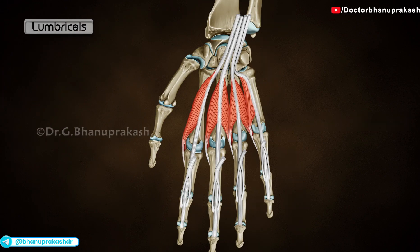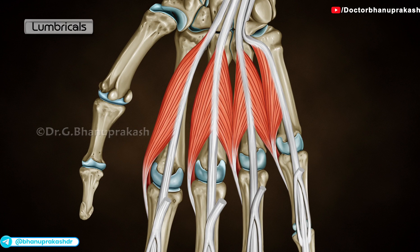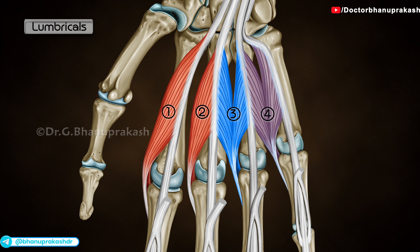Lumbricals. There are a total of four lumbricals. From lateral to medial, the lumbricals are numbered 1, 2, 3, and 4. Lumbricals 1 and 2 are unipennate. Lumbricals 3 and 4 are bipennate.